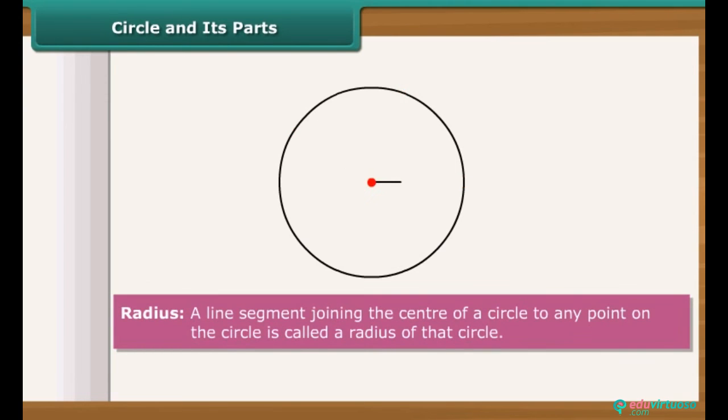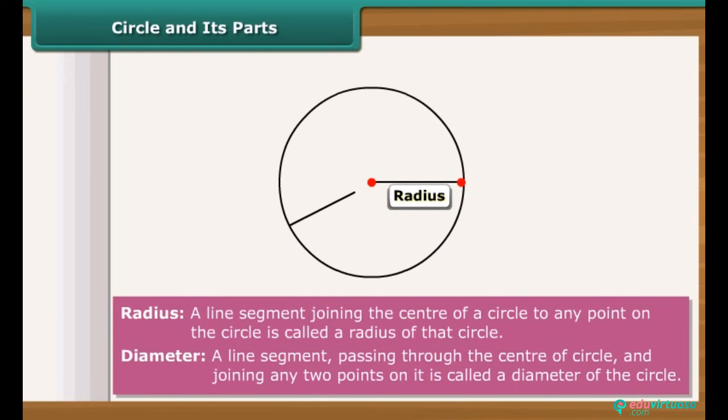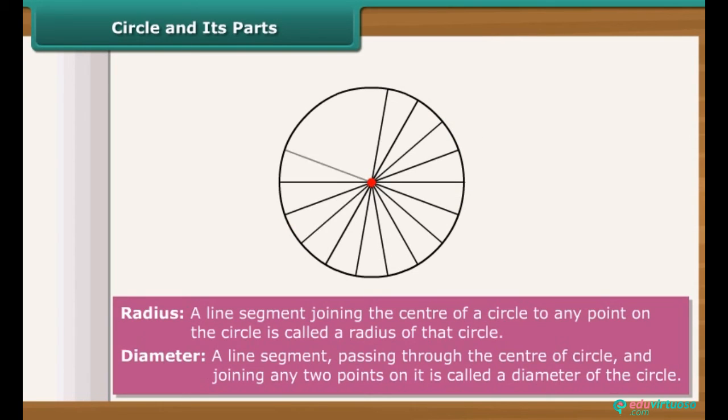A line segment joining the center of a circle to any point on the circle is called a radius of that circle. And a line segment passing through the center of circle and joining any two points on it is called a diameter of that circle. There can be infinite number of radius for a given circle. Similarly, there are infinite numbers of diameter for a circle.